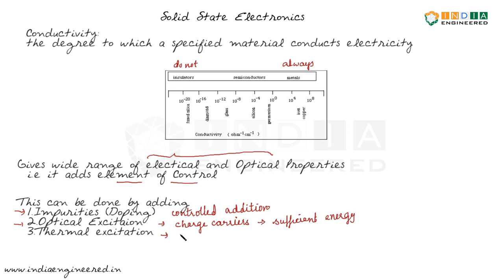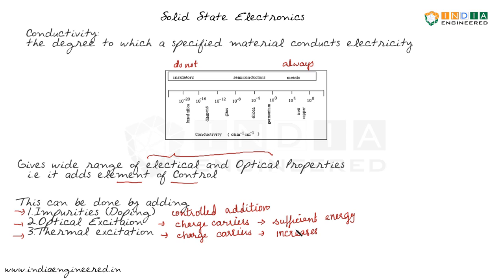Another way is to thermally excite the semiconductor. As the temperature increases, the conductivity of semiconductors increases. This is because temperature also generates charge carriers, so the conductivity increases as temperature increases.